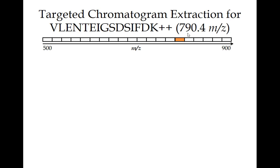Now diving into how Skyline processes this data and what happens when you query for a peptide in DIA. We have this comprehensive dataset, and the way our lab does this, we don't just turn around trying to find a list of identifications. We say, we have this dataset — now I'm going to ask questions of it. We're asking: is this particular peptide in the data or not?